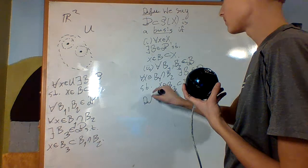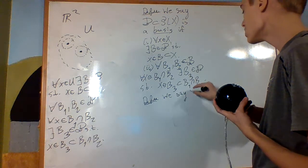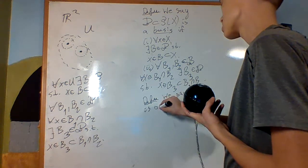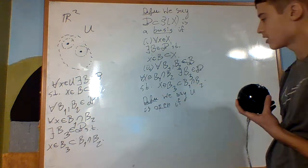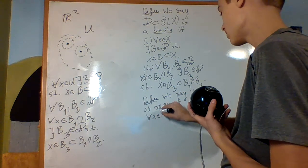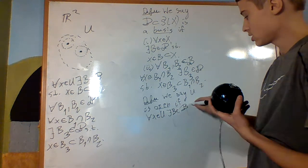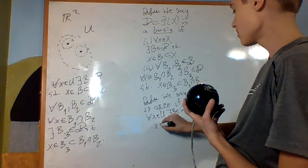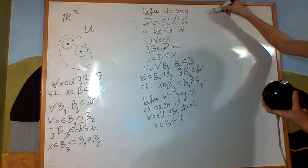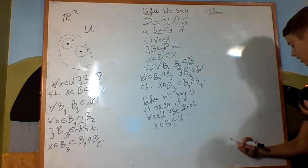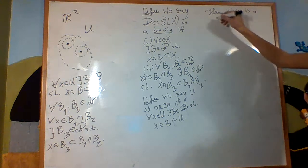We make another definition: we say U is open if, for every x an element of U, there exists a B an element of the basis such that x is an element of B, which is a subset of U. A theorem is that this collection of open sets is a topology.